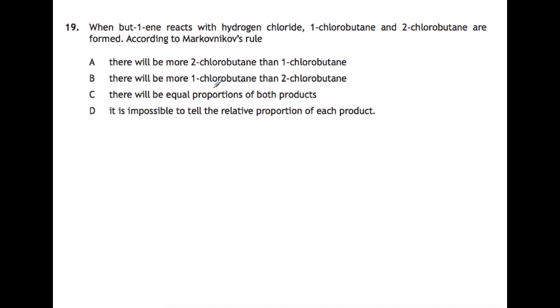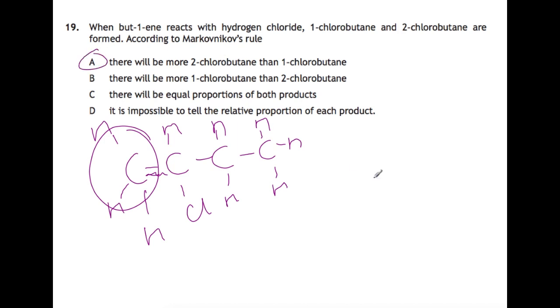Question 19. When but-1-ene reacts with hydrogen chloride, 1-chlorobutane and 2-chlorobutane are formed. According to Markovnikov's rule, what will happen? If we draw this out, we're going to have butene. Markovnikov's rule states that when you're adding on hydrogen chloride, the H will add to the carbon which already has the most Hs attached, which is this one here with two. So you're going to end up having your H onto here and your Cl would go on to there. So you'll get 2-chlorobutane as your major product and 1-chlorobutane as a minor product. You will still get both of them, but you will get more of the two than the one. So A is your answer.